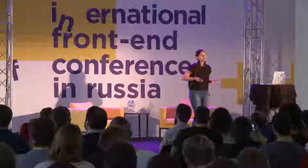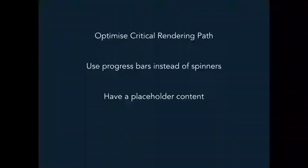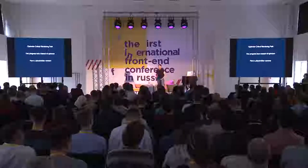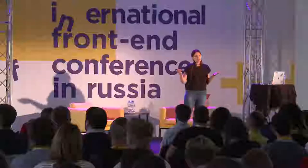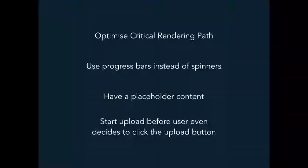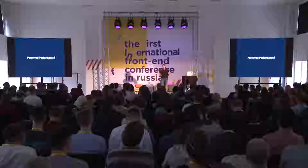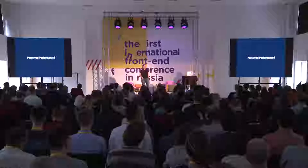Or even things about how to fake performance — like how to use progress bars instead of spinners, because users think that something is loading faster. Or how to have placeholder content — those grey boxes on Facebook instead of content that show users something is going to appear. Or even starting to upload a file before the user even knows they want to upload it, like when they choose a photo in their gallery and it starts uploading without them hitting upload. I don't really agree with what we call perceived performance now — I feel it's more about faking things.